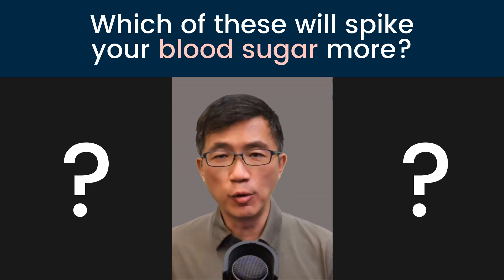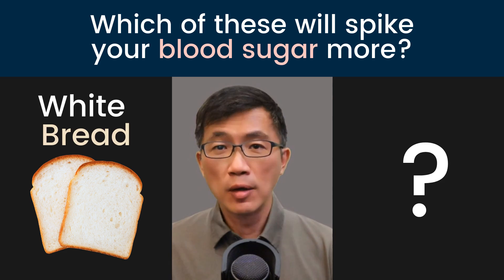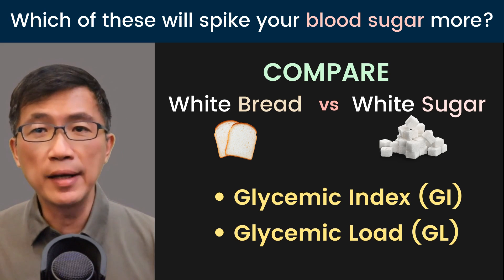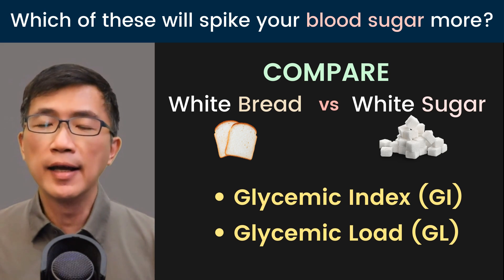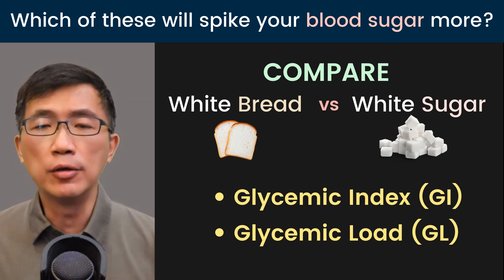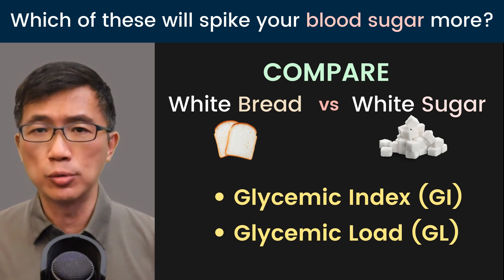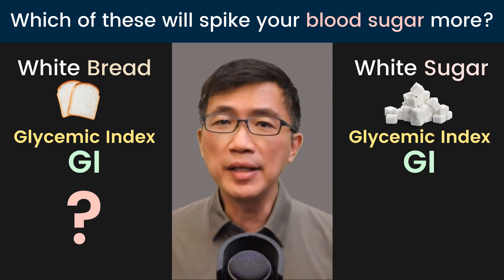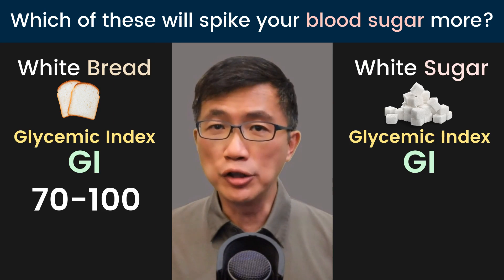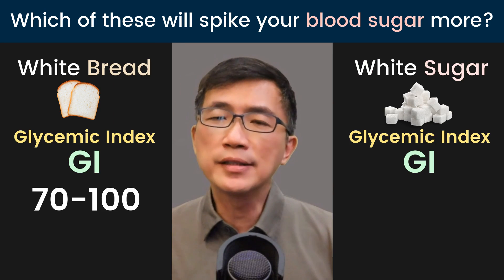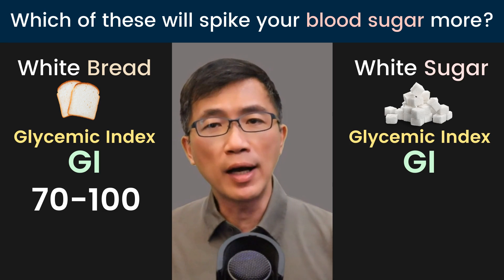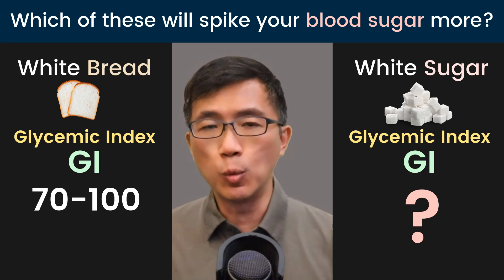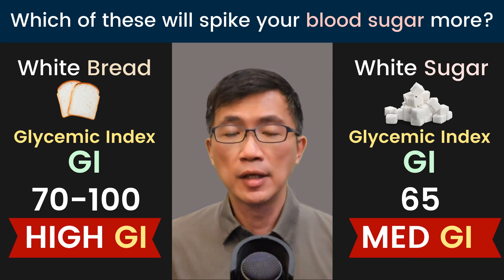Which of these will spike your blood sugar more — white bread or white sugar? To answer that, let's compare the glycemic index (GI) and glycemic load (GL) of white bread versus white sugar. The glycemic index of white bread ranges from 70 to as high as 100, depending on how it is made, whilst the glycemic index of white sugar is 65.